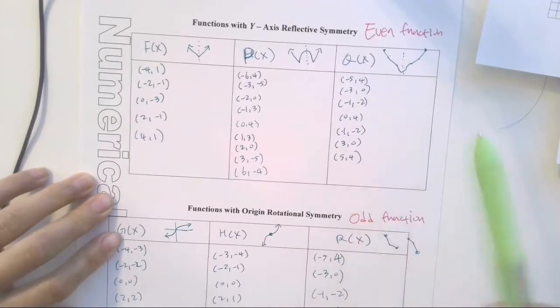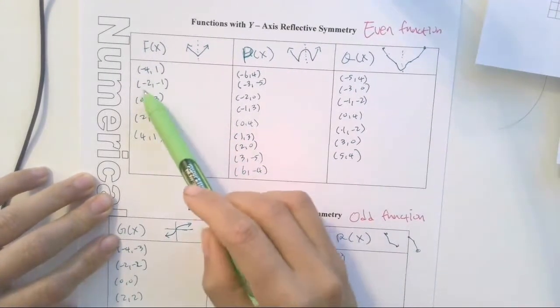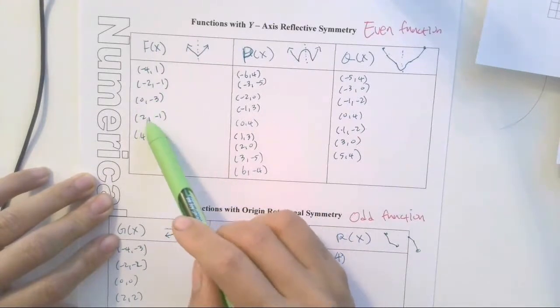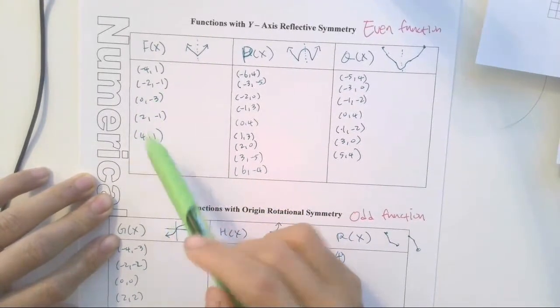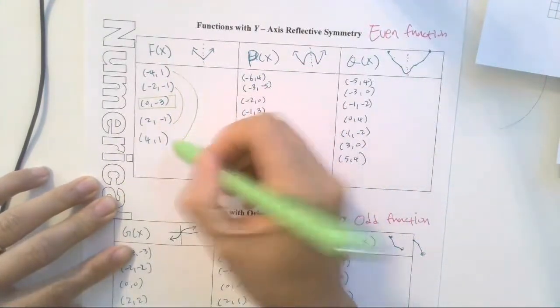So I have negative 4, 1, negative 2, negative 1, 0, negative 3, 2, negative 1, 4, 1. So from this point right here, what do you notice?